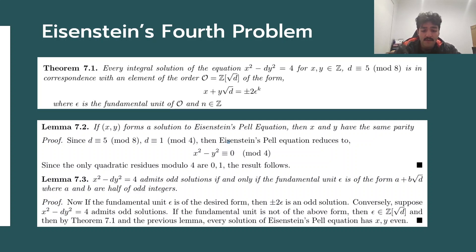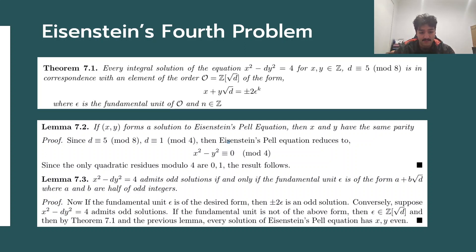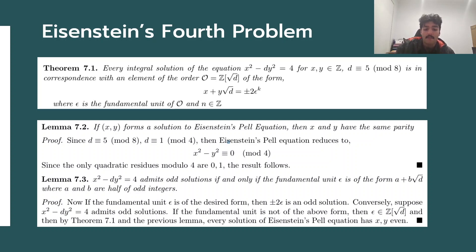Specifically, each solution is of the form x + y√d equals plus or minus 2ε^k for some power k. That is, once we find the fundamental unit, we can find all solutions to the Pell equation and determine the existence of odd solutions. Since each solution is of the form 2 times a power of ε, the only way we can have an odd solution is if ε is half of an odd integer. We can also show that x and y must have the same parity to form a solution.